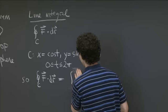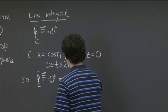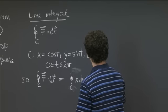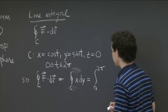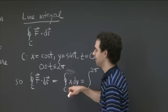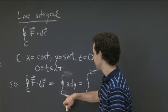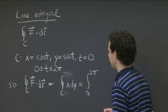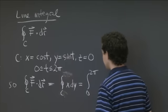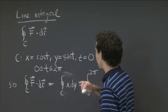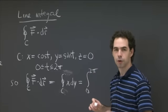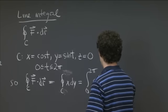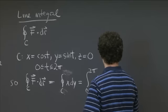This is still the integral over C of x dy. Now switching to the parametrization, t goes from 0 to 2π. x is cos t, and y = sin t, so dy = cos t dt. This gives us cos t times cos t dt, which is cos² t dt.